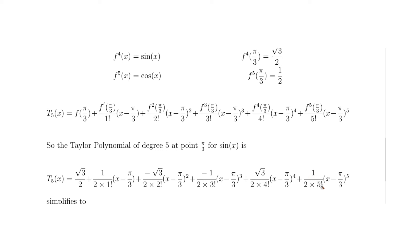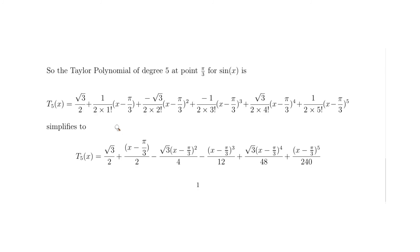Now we can simplify: 5 factorial is 120, so 2 times 120 gives 240. For the √3/2 over 2 factorial term, 2 times 2 is 4, giving √3/4 — but it's negative, so we get minus √3/4. We can also simplify √3 on top by multiplying numerator and denominator by √3, then dividing everything by 3 to simplify. The (x - π/3) term has 2 times 1 factorial = 2 in the denominator.